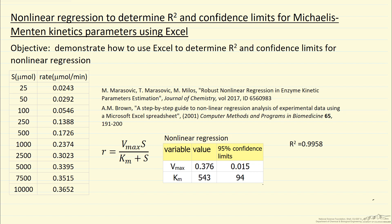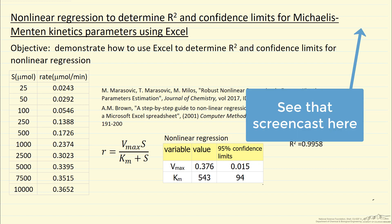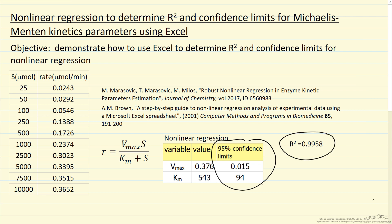In this screencast, I'm going to describe how we obtained the R squared value and confidence limits for parameter values that we determined by nonlinear regression. We used nonlinear regression in Excel using the Excel solver in another screencast. Here we're concentrating on how we got the values for the confidence limits and the R squared values. We're going to go to the same spreadsheet and continue to add to it to get these values.